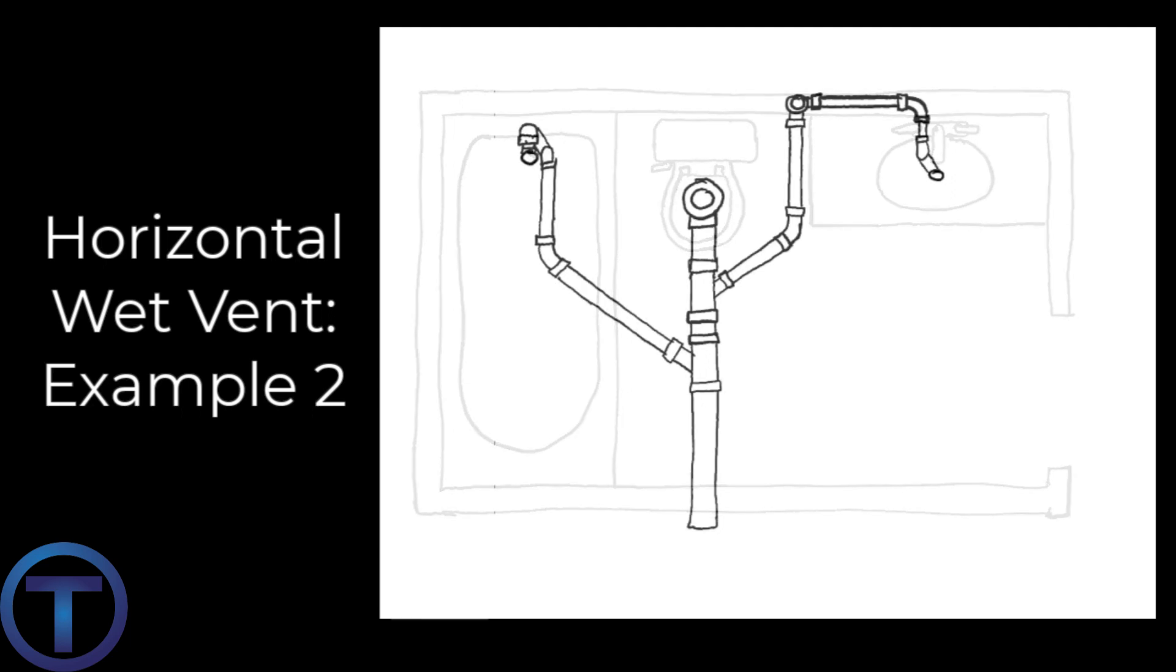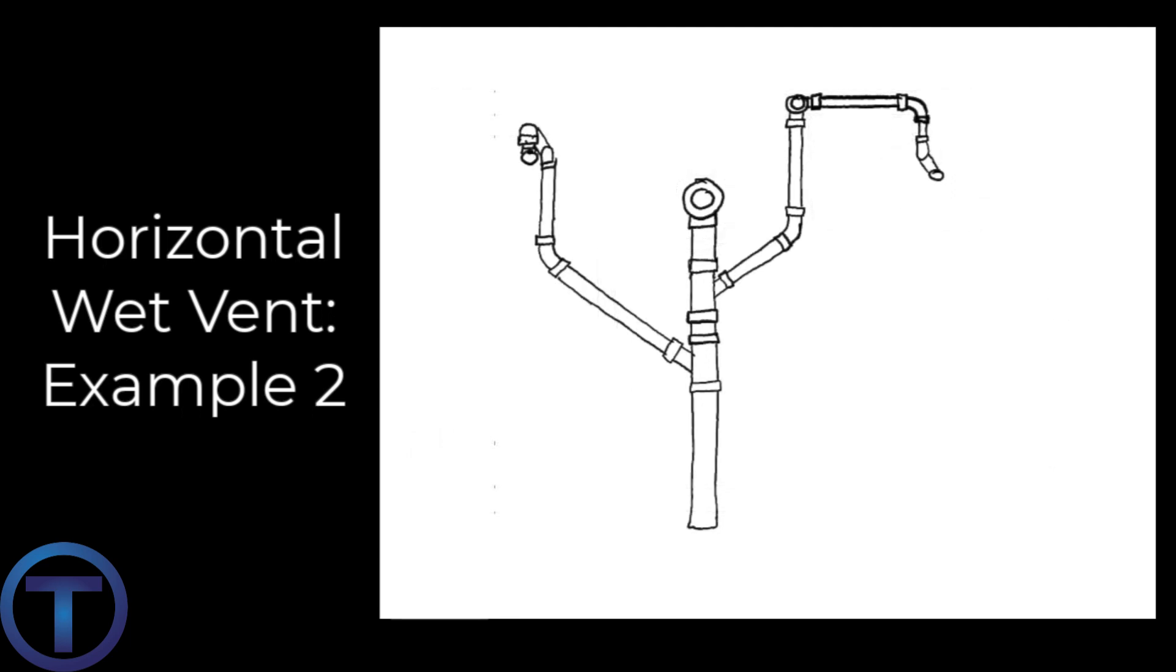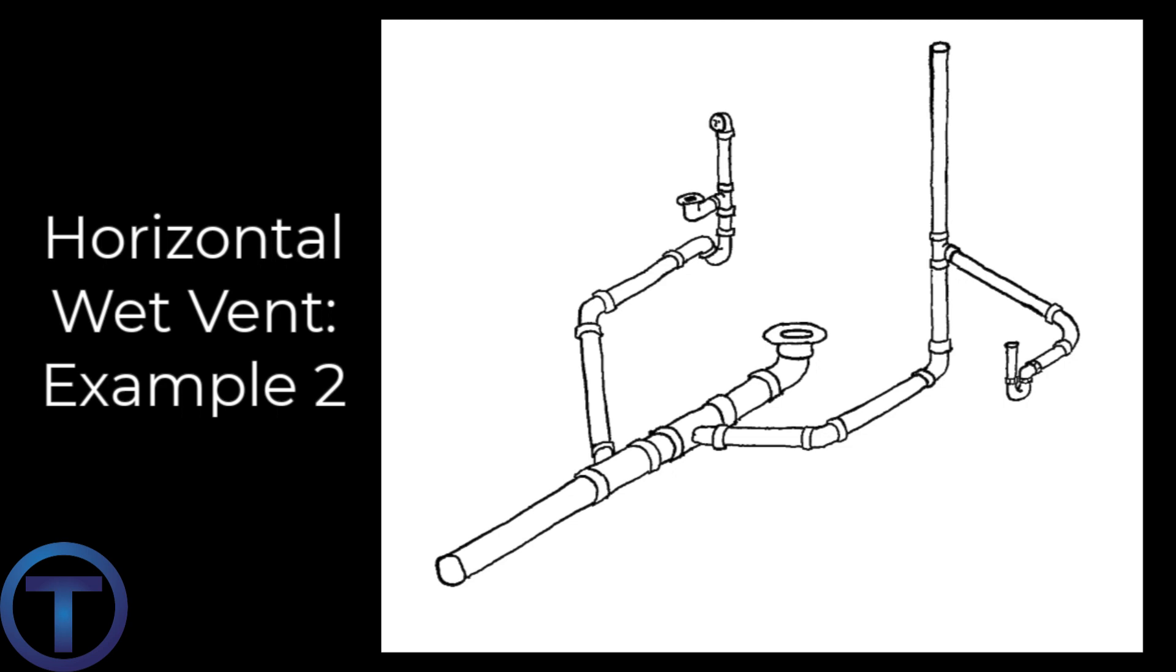That's going to be the vent for all of these fixtures. Now let's follow this downstream from the lavatory to make sure that we're clear on what portions of the drainage are considered a vent. If we start at the sanitary T where the lavatory connects and follow that downstream through the 90, through the 45, and then into that three-by-two wye...